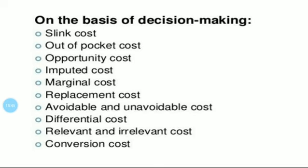The next and last classification is classification on the basis of decision making. On this basis, the cost is classified into different types. First, sunk cost. Sunk costs are historical or past costs. These are the costs which have already been incurred as a result of decisions made in the past. Such costs cannot be reversed or revised by a future decision. These are not relevant for decision making.